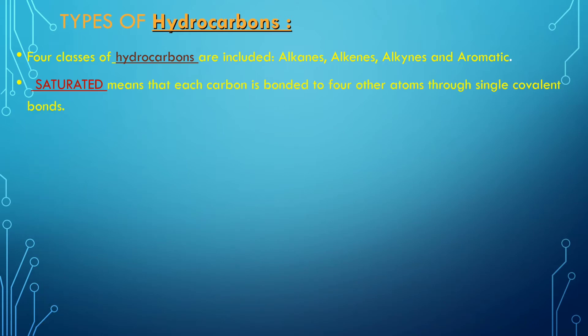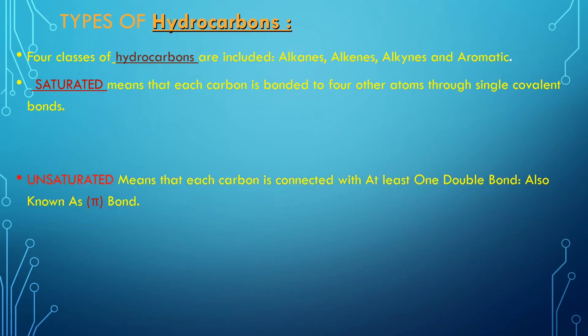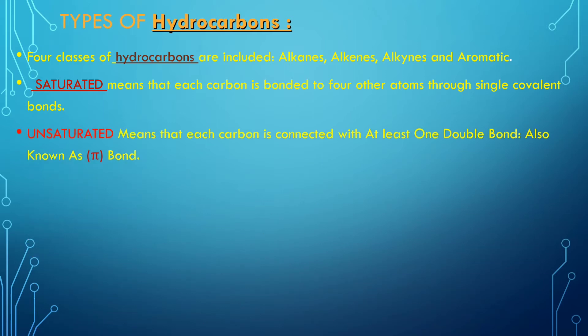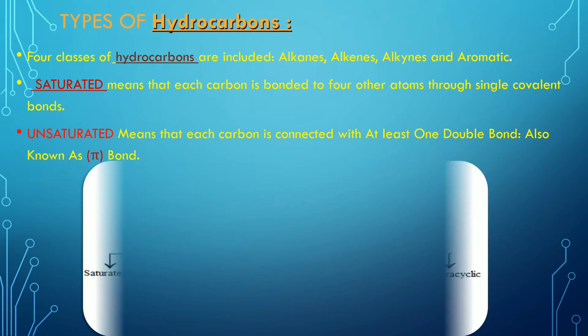Saturated means that each carbon is bonded to four other atoms through single covalent bonds. Unsaturated means that each carbon is connected with at least one double bond, also known as a pi bond.